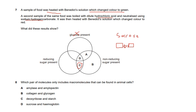You shouldn't say glucose specifically, because glucose is a reducing sugar but so is fructose and others. Because the option says specifically 'reducing sugar present,' it means it can't always be glucose. So your answer is C.